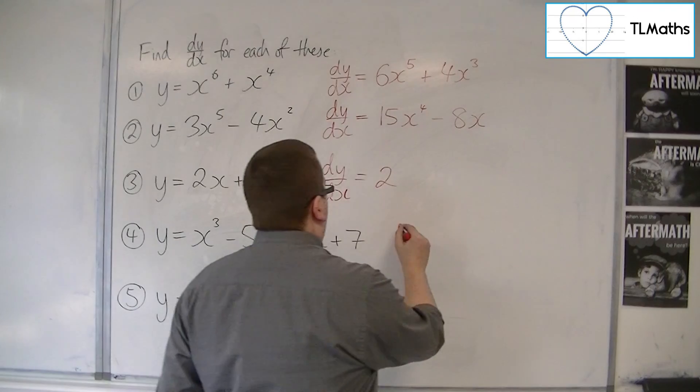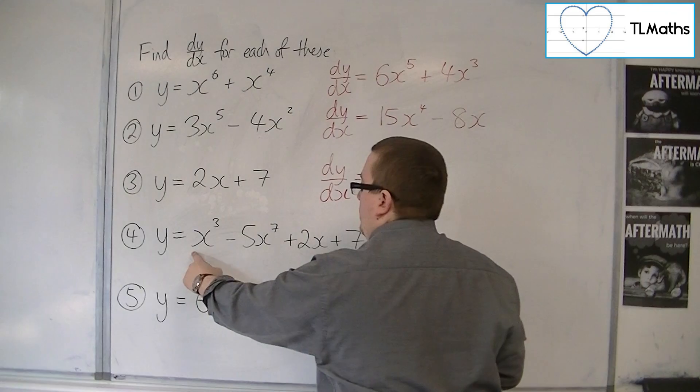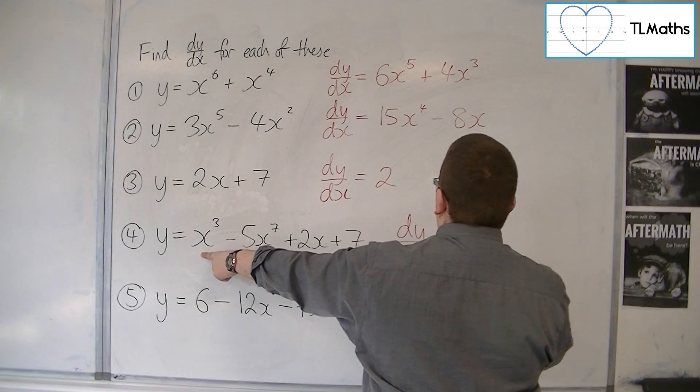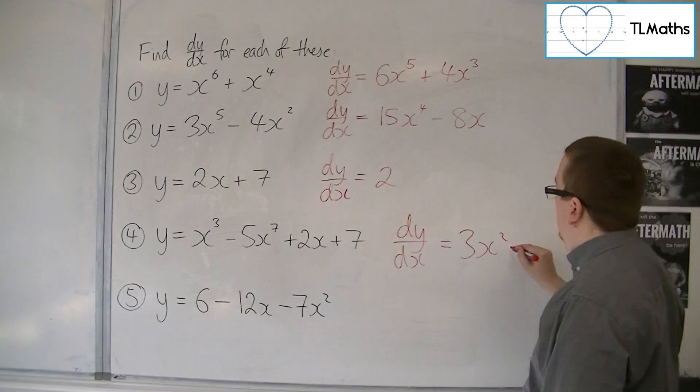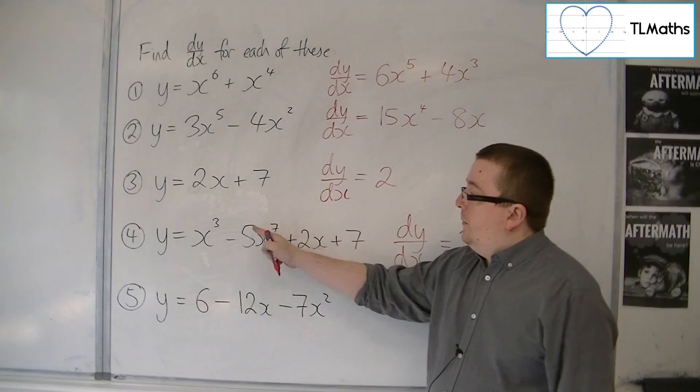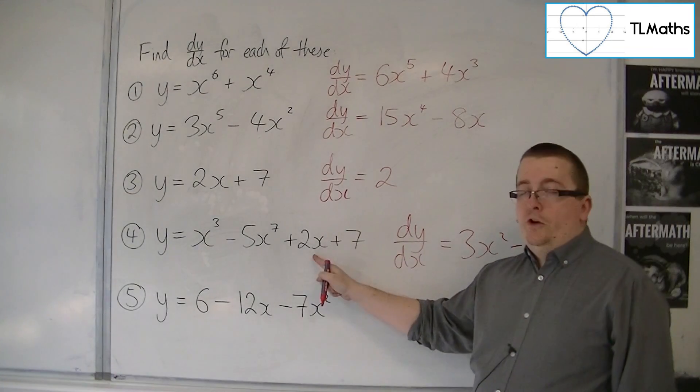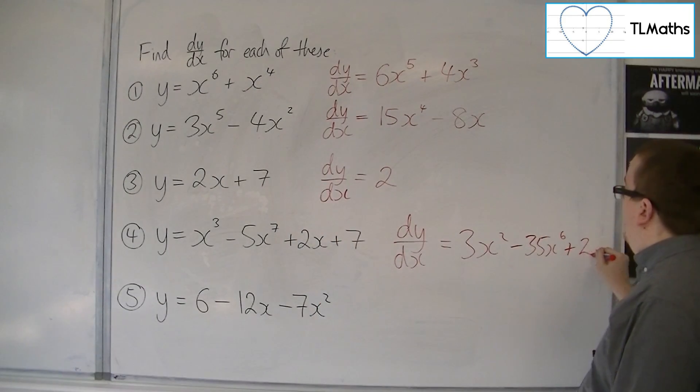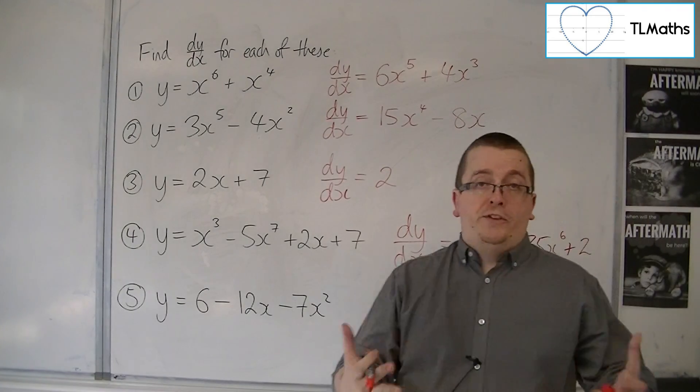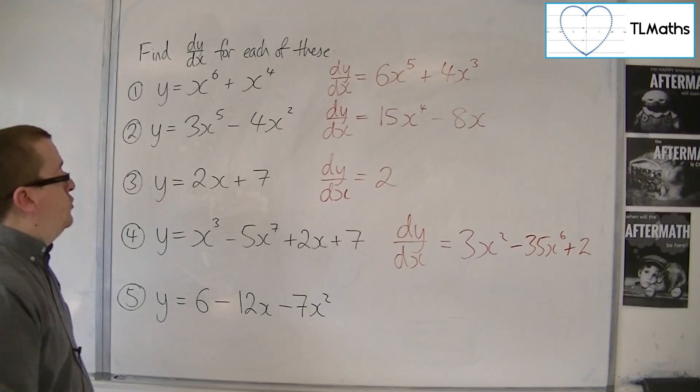Number 4. y = x^3, so 3x^2 - power comes down to the front, take 1 off the power. Take away, 7 comes down to the front, multiplies with the 5 to make 35, take 1 off the power. Then we've got 2x, which differentiates to 2 in exactly the same way as we had there. And then the 7 differentiates to 0, so that disappears. And that is the gradient function of number 4.